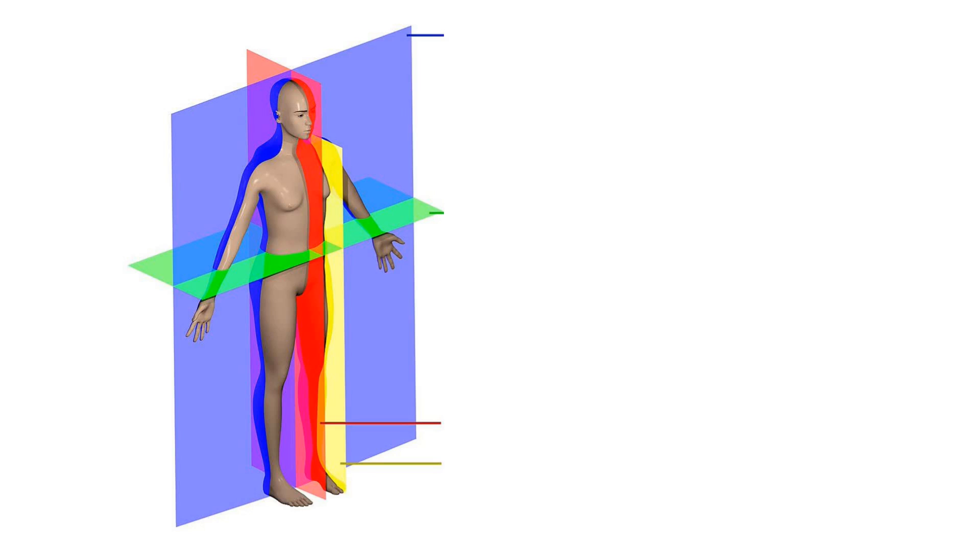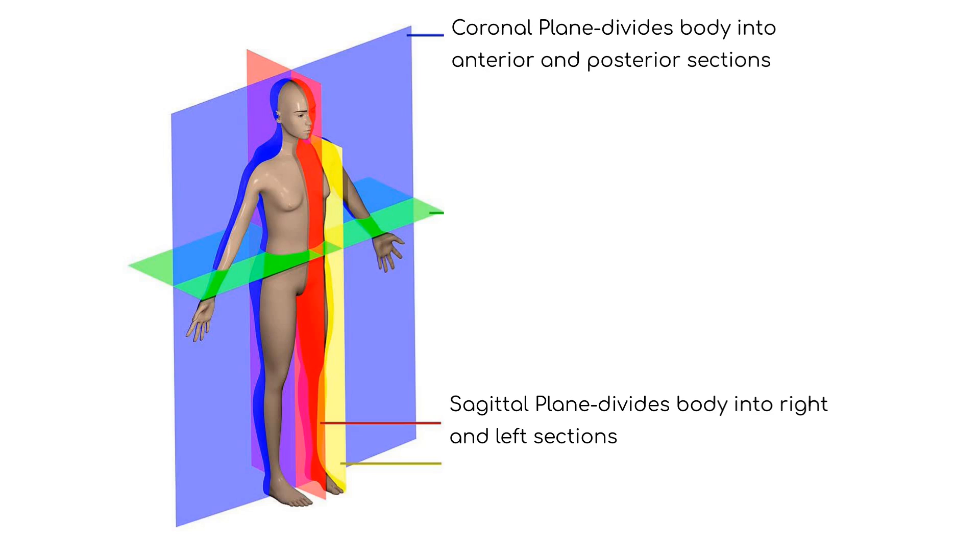A plane is a two-dimensional object that can divide the body into two sections. The sagittal plane divides the body into right and left sections. A coronal plane divides the body into anterior and posterior sections. And a transverse plane divides the body into superior and inferior sections.